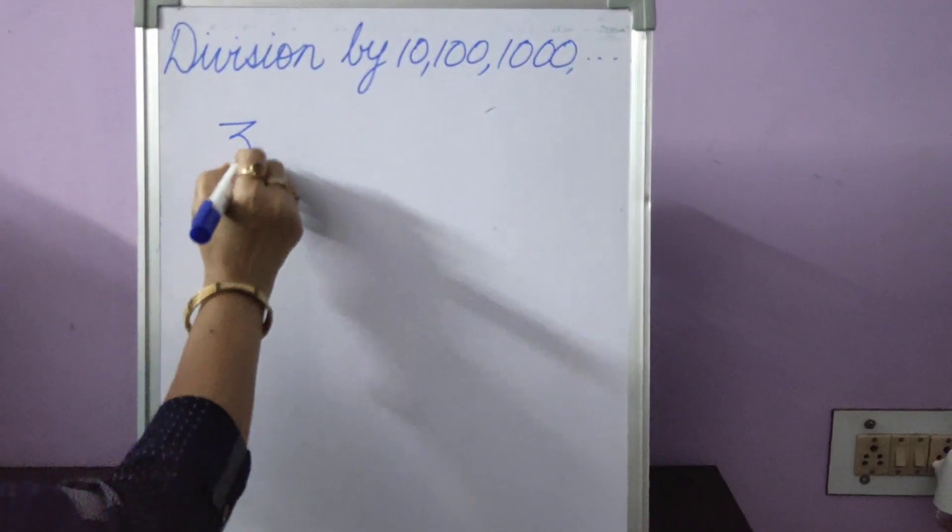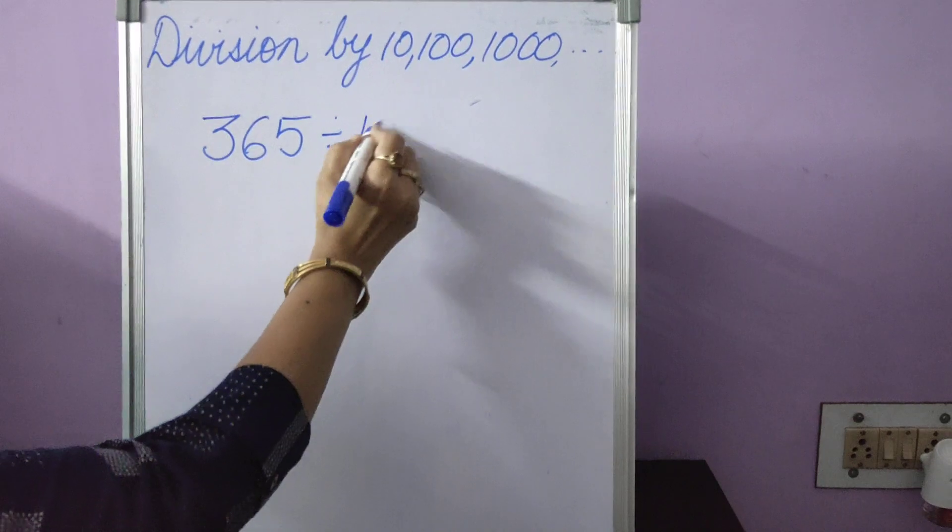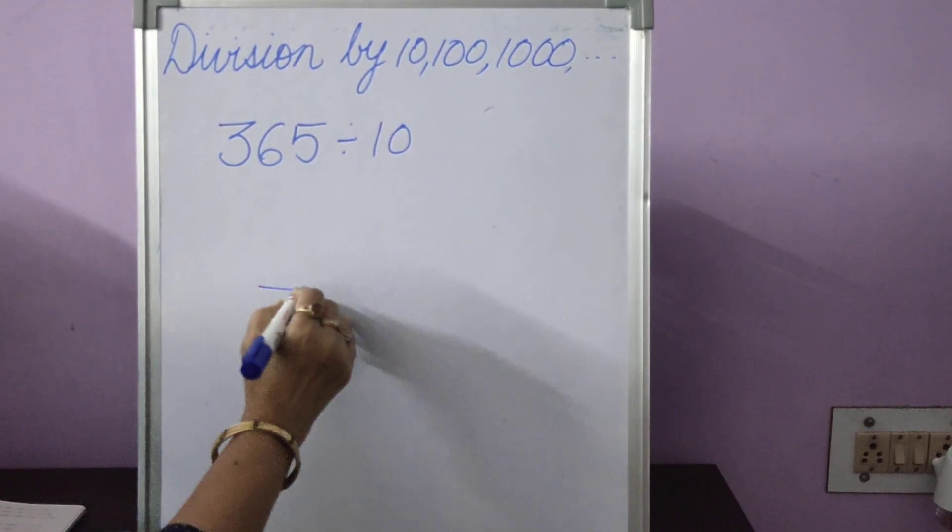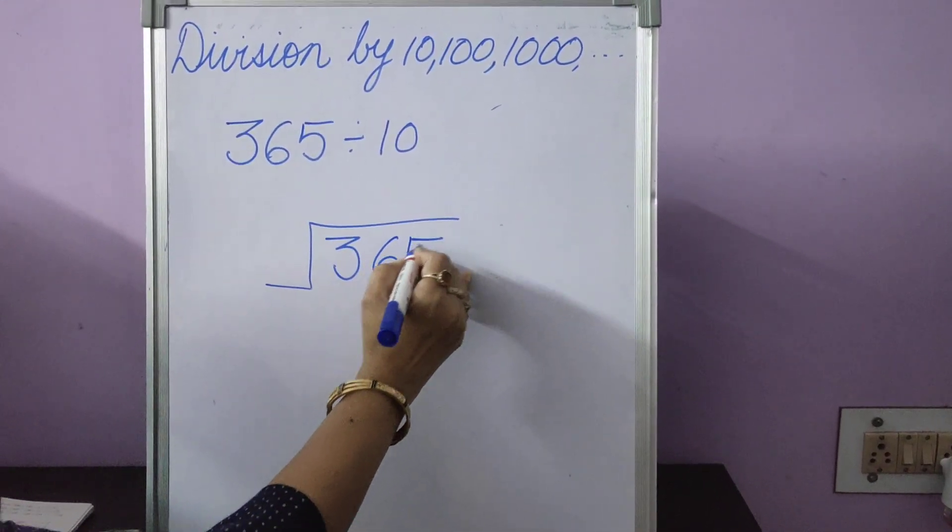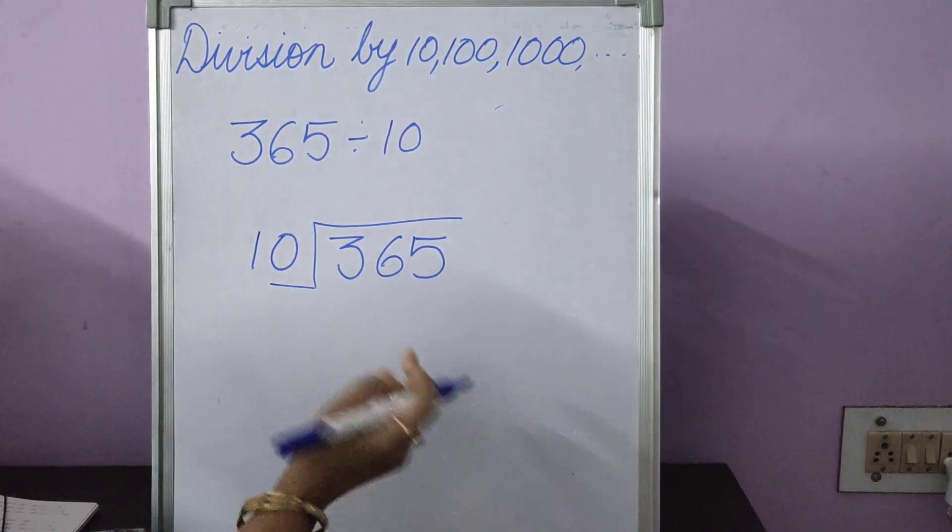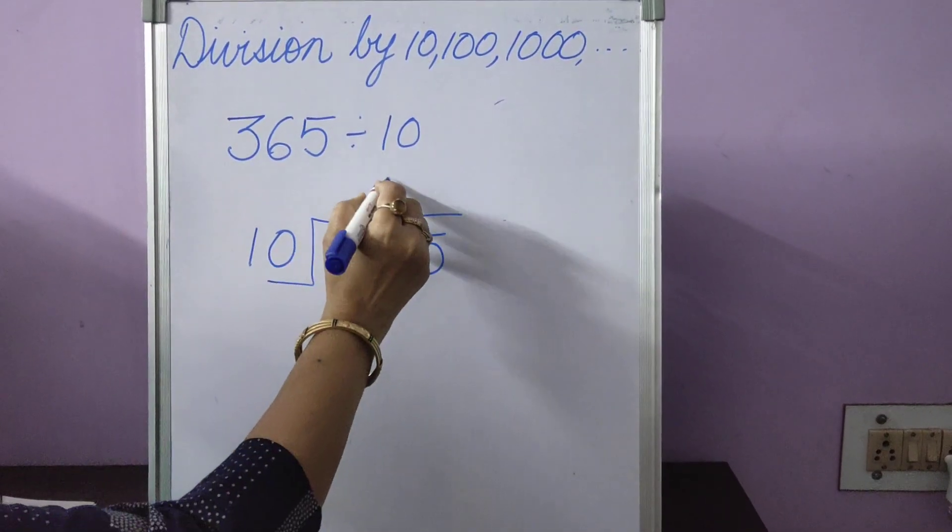Any sum given to us, for example you have 365 divided by 10. Up till now the way you have been doing it, you will do the long division. 365 is the dividend, 10 is your divisor, you will use the tables of 10. First place will remain empty.